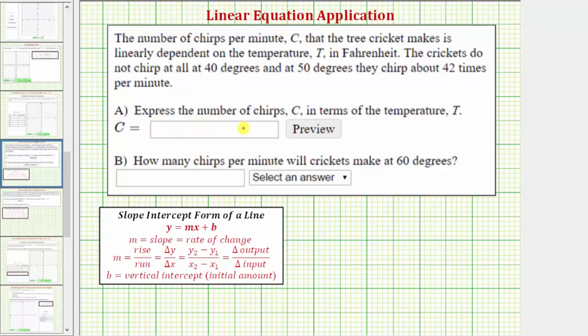Part A: we're asked to express the number of chirps C in terms of the temperature T. To find the equation that relates C and T, we'll write the given information as ordered pairs, then use the ordered pairs to find the linear equation. Because we want to express C in terms of T, T is the input variable and C is the output variable.